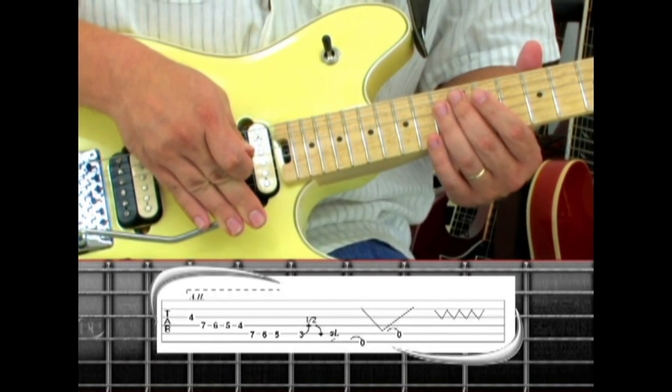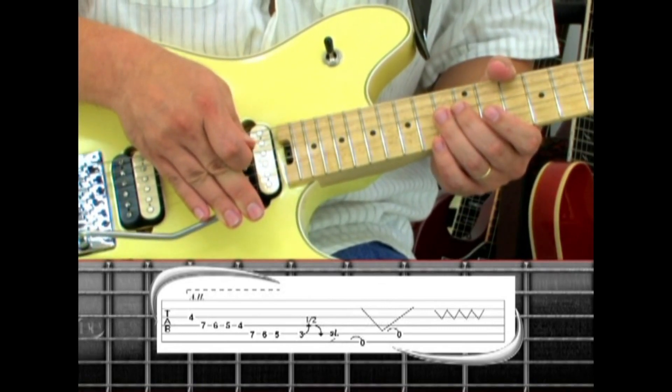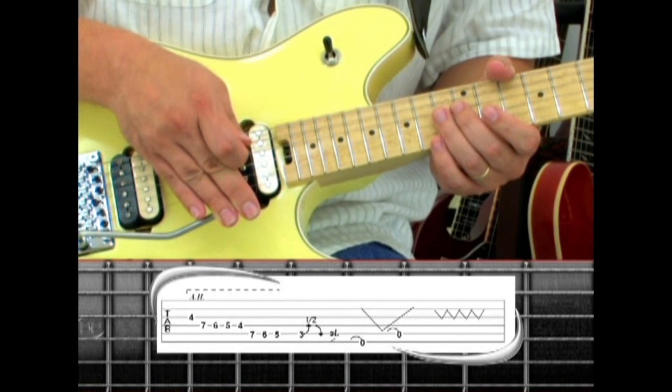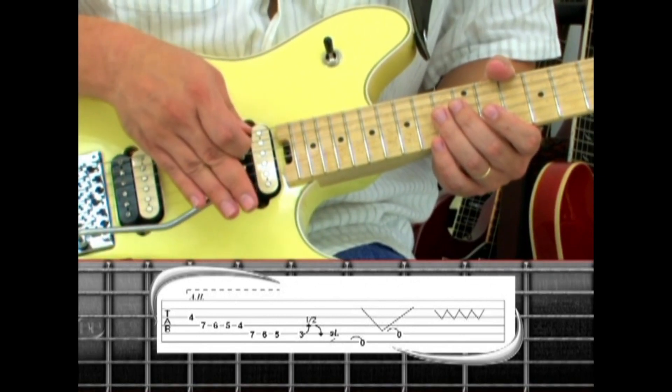As you return the bar, sound the fifth string by pulling off to open. Once the bar is returned, give it four more dips.